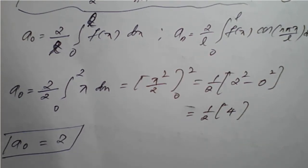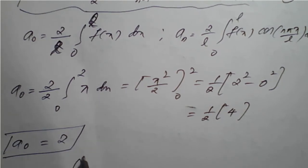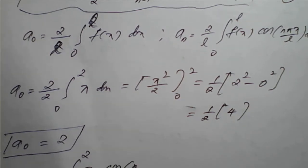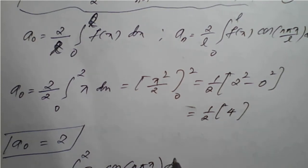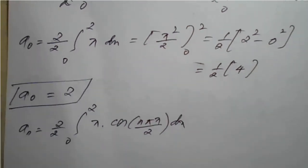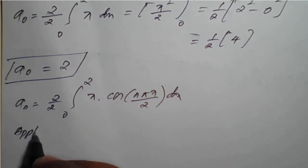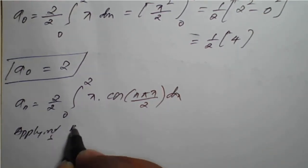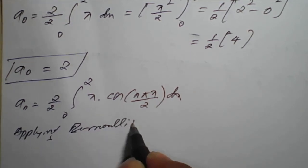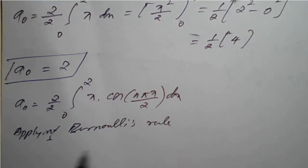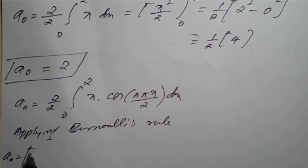Now computing aₙ: aₙ = (2/2) times the integral from 0 to 2 of x·cos(nπx/2) dx. The factor (2/2) cancels, leaving the integral of x·cos(nπx/2) dx. We need to apply Bernoulli's rule here.